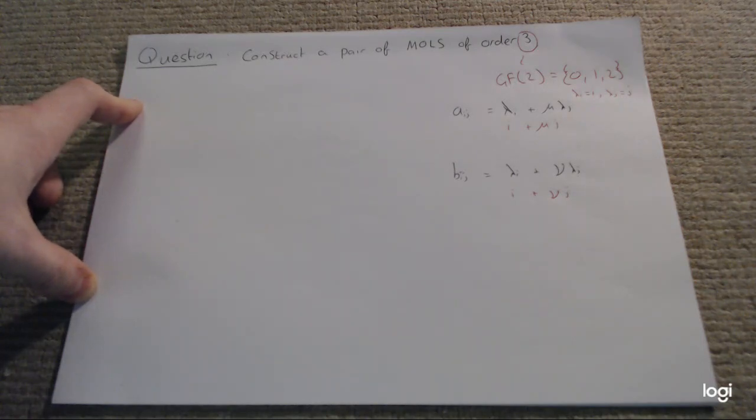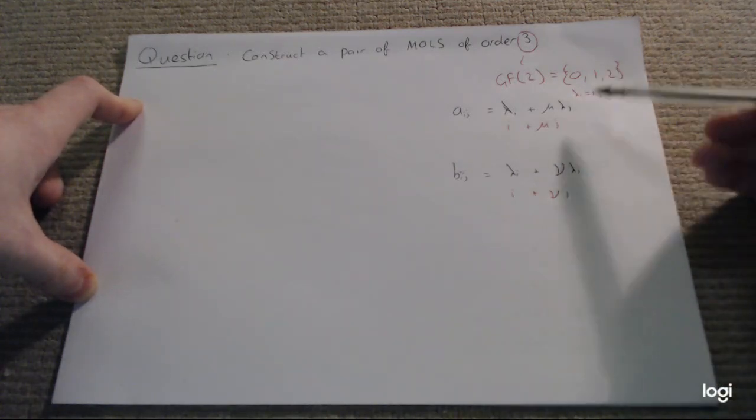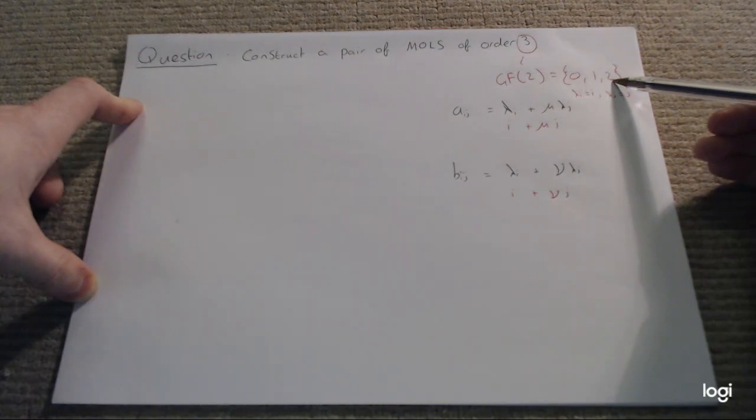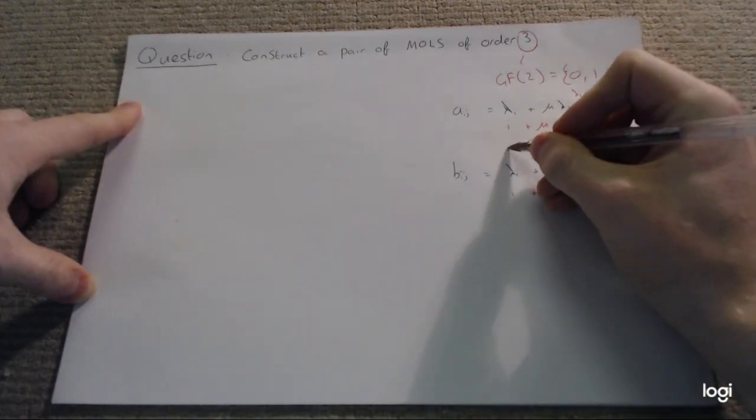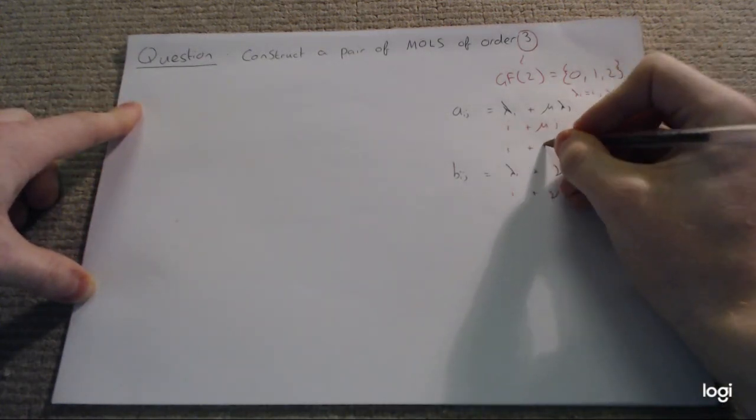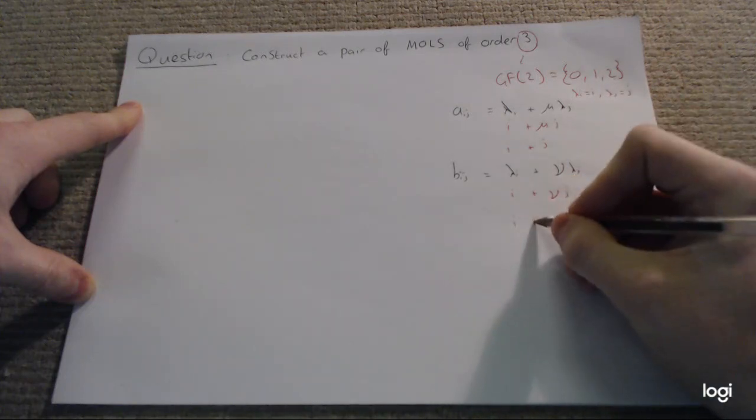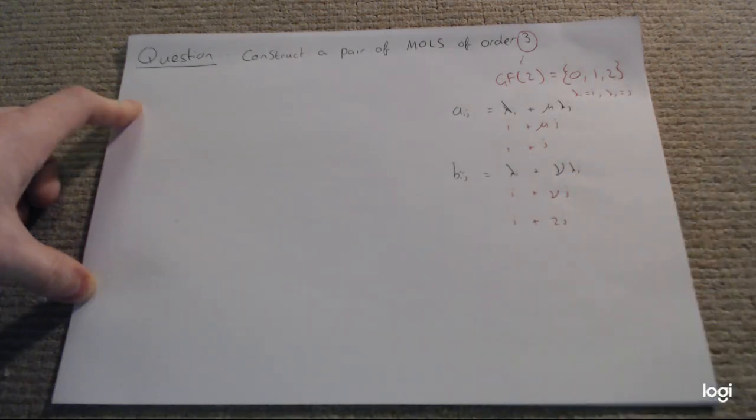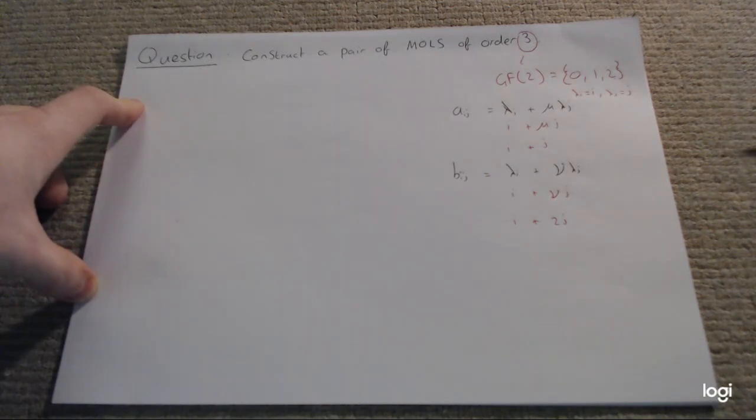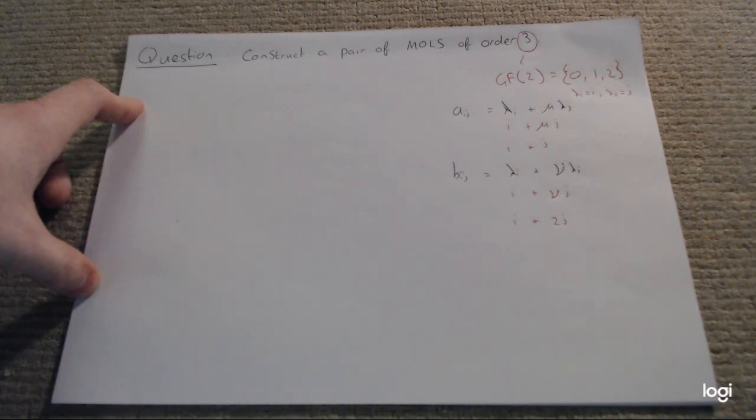We can go a little bit further. In this case, we have mu being 1 and nu being 2, so we've got i plus j and i plus 2j. If you are in higher orders, this doesn't seem to work with 4. I suspect it's got something to do with being a prime power. But it definitely works with order 5, and you can just keep using these to have a set of mutually orthogonal Latin squares.